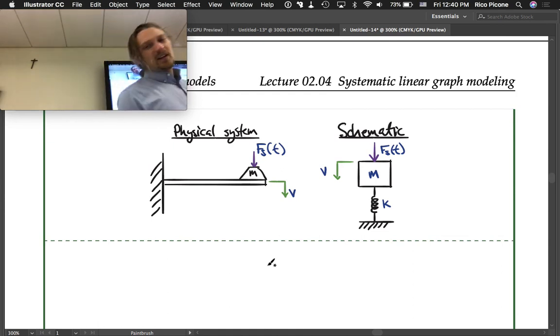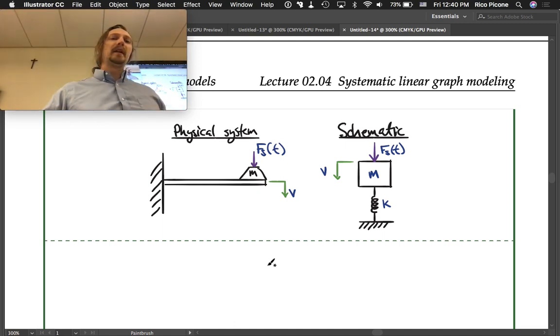Here is a physical system. It is some sort of a platform or a beam that's cantilevered out, has a mass on it, and it's got some force being applied to this mass. You could imagine maybe this is a shelf with a motor on it.